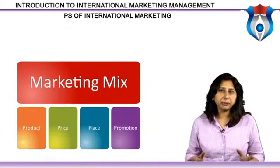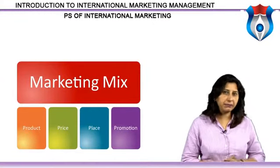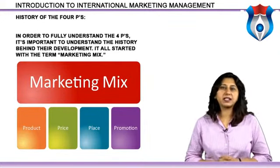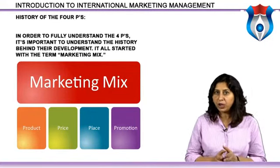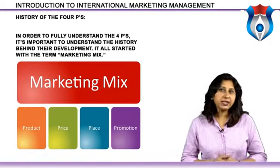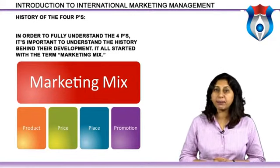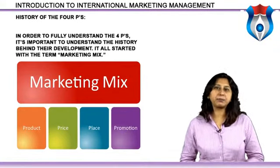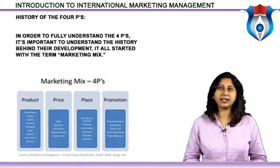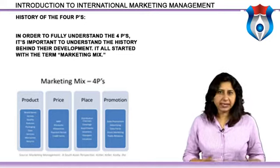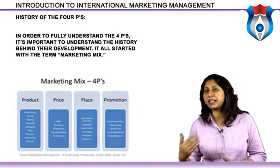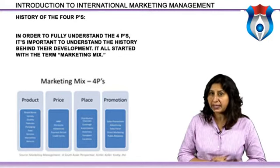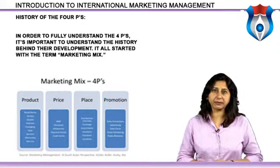In order to fully understand the four P's, it's important to understand the history behind their development. It all started with the term marketing mix. In the 1940s, James Culleton described the position of marketing manager as someone who is a 'mixer of ingredients.' More than a decade later, Neil H. Borden published the concept of the marketing mix, which was an adaptation of Culleton's original theory. The marketing mix included product, pricing, planning, branding, distribution channels, advertising, promotions, personal selling, packaging, display, servicing, physical handling, and fact-finding and analysis. It wasn't until E. Jerome McCarthy grouped each aspect into four categories — the four P's of marketing.